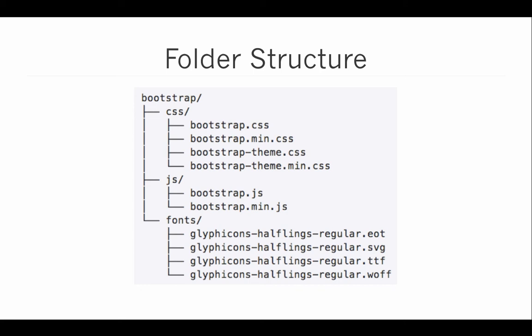Inside the CSS folder, we have bootstrap.css, which is the uncompressed compiled CSS, and bootstrap.min.css, which is the minified version with a slightly smaller file size — though the minified version destroys the readability of the file, making it harder to make adjustments. We also have the bootstrap theme and bootstrap theme.min. In the JavaScript folder, we have bootstrap.js and the minified version, bootstrap.min.js, which includes all the JavaScript code for rich user interface behavior and jQuery plugin code. Lastly, there's a fonts folder containing the Glyphicon Halflings Regular font in all common web font file types, so it should work in just about any browser.